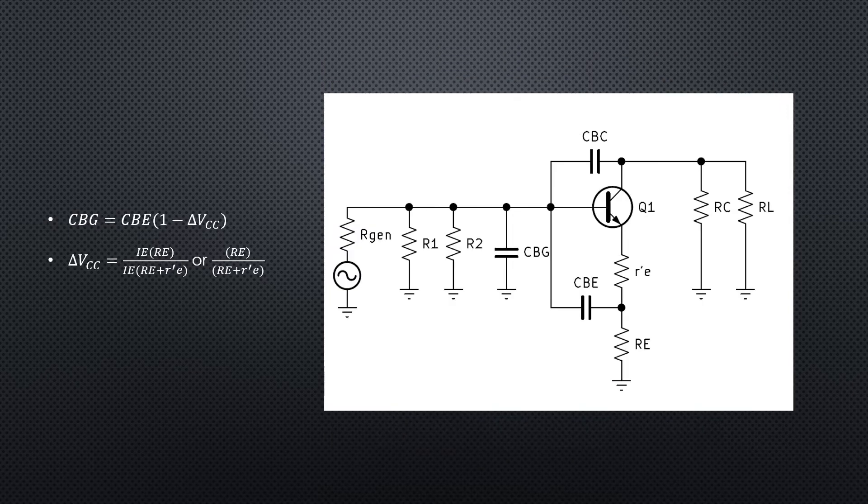Now we can find the capacitance base to ground, or CBG. CBG equals CBE times quantity 1 minus the gain of the amplifier in common collector mode, which we can find by dividing RE by RE plus r prime E.